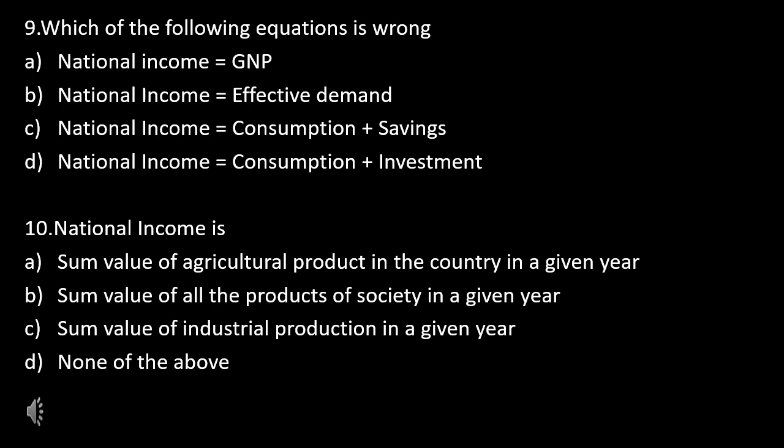Question 10: National income is — some value of agricultural product in the country in a given year, some value of all the products of society in a given year, some value of industrial production in a given year, or none of the above?